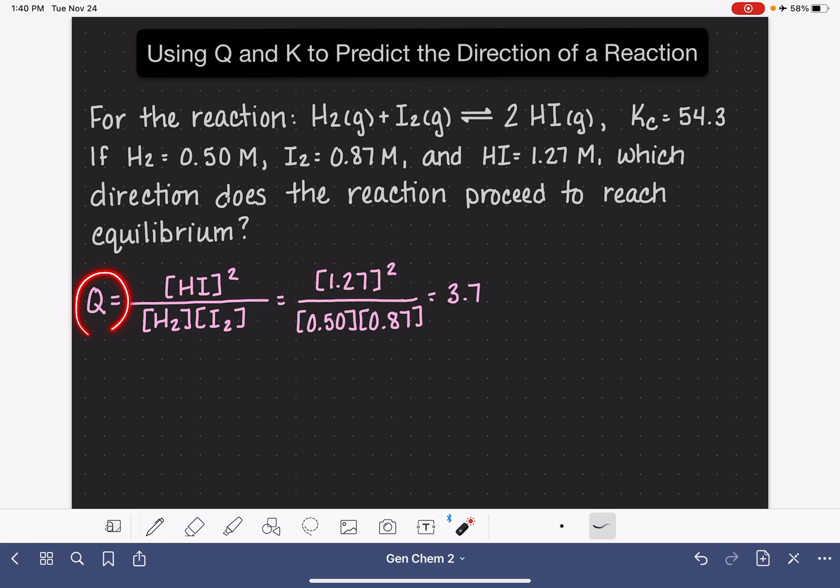So the value of Q is 3.7, and like I said, is not the same as K. So this number that we get here is not 54.3. That just simply means that this system is not in equilibrium.